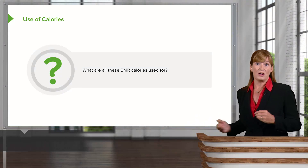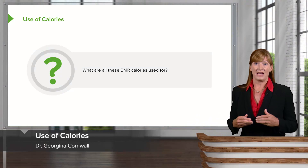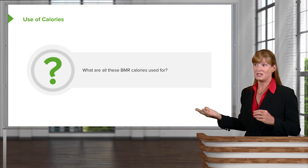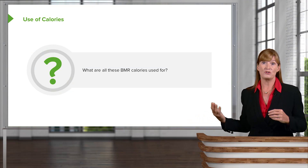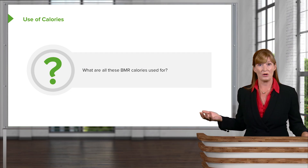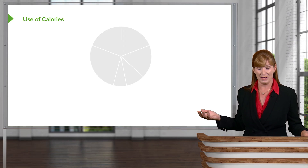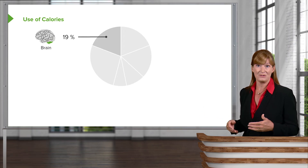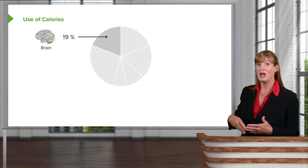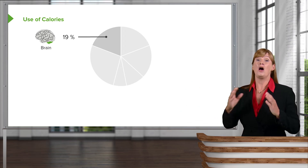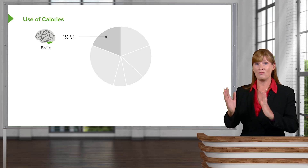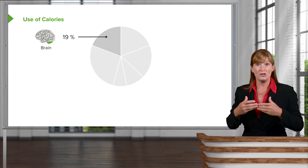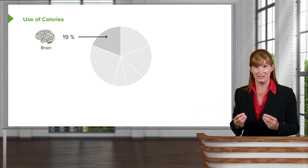So how do we use all of these different calories, especially the ones for basal metabolic rate? You need to know where the majority of calories go to, so a quick graphic here to help us with that. Our brain uses almost 20%. You really need to consider the relativity — which organ uses the most calories?